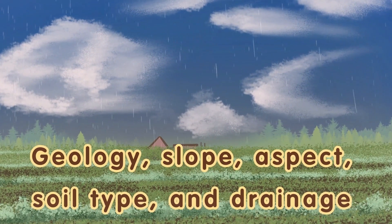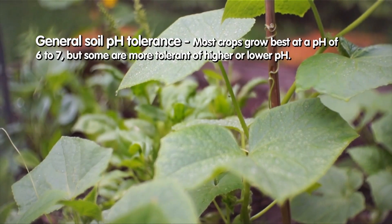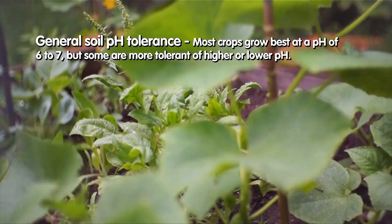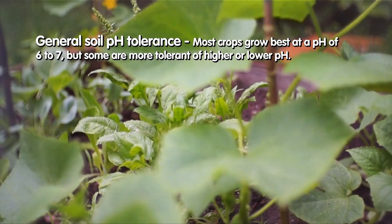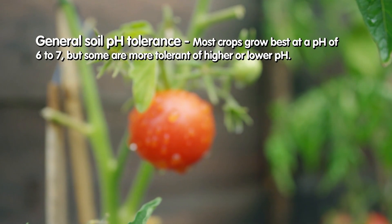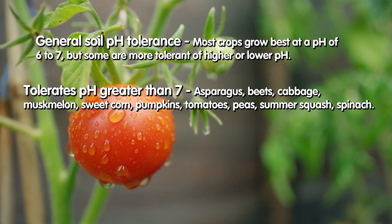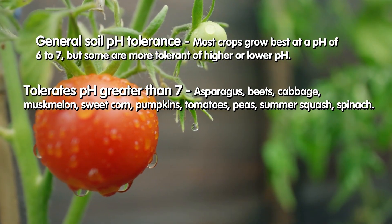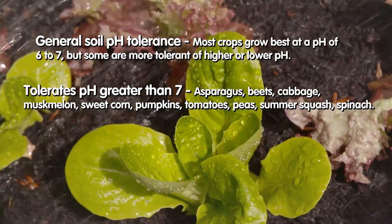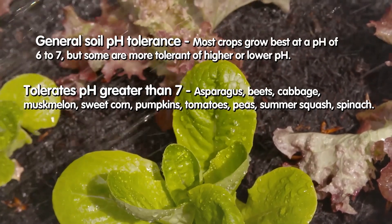Soil color is not 100 percent reliable, but it can be a nice indication of what you're looking at. Regarding general soil pH — most crops really want a pH between six and seven, but some will be more tolerant. Those are the ones we might want to think about if we have either a higher or lower pH. For those of us out west, where we tend to have higher calcium, higher magnesium, and higher pH soils...